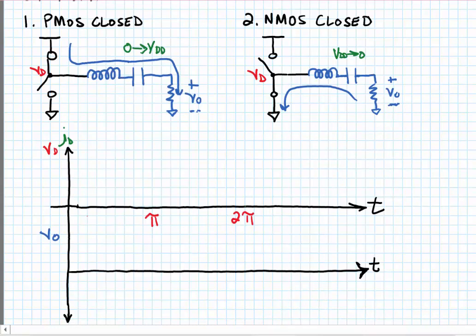This repeats every two pi cycles, and we say that the PMOS is closed from zero up to pi, and the NMOS is closed from pi up to two pi.